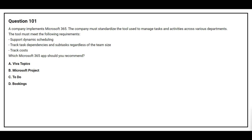Question 101. A company implements Microsoft 365. The company must standardize the tool used to manage tasks and activities across various departments. The tool must meet the following requirements: support dynamic scheduling, track task dependencies and sub-tasks regardless of the team size, and track cost. Which Microsoft 365 app should you recommend?